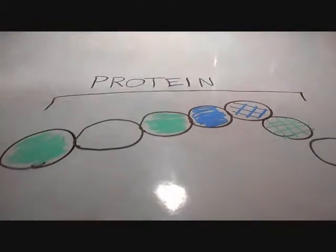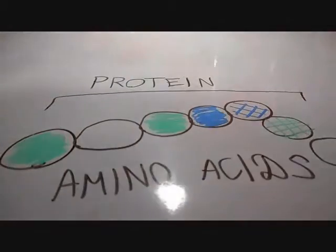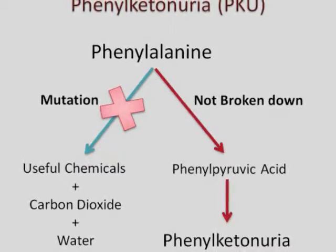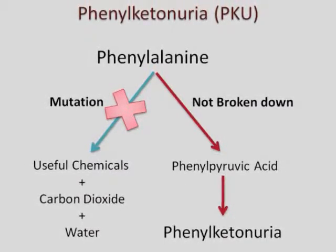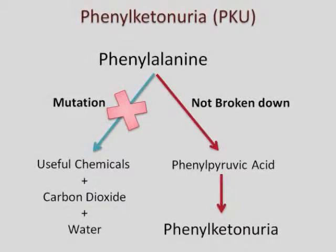As we know, proteins are made of specific building blocks called amino acids. When we talk about PKU, there is a type of amino acid that the human body cannot break down or metabolize, and this is phenylalanine.